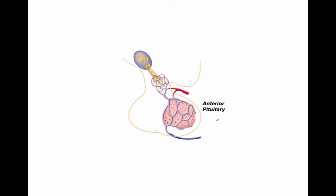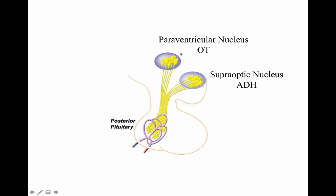The anterior pituitary or adenohypophysis receives its signal for release from releasing hormones, which are transmitted through the portal system to stimulate the release of stimulating hormones. The paraventricular nucleus releases oxytocin, the supraoptic nucleus releases antidiuretic hormone, and those hormones are created in these nuclei and transferred to the posterior pituitary or neurohypophysis.